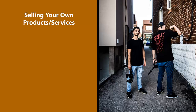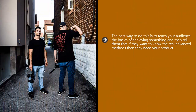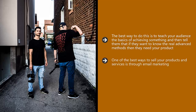Selling your own products or services: this is something you can do fairly quickly with your vlog. Examples include a book, a how-to guide, a video training course, or coaching services. The best approach is to teach your audience the basics of achieving something and then tell them that if they want the real advanced methods, they need your product. Provide value in your videos to get your audience hooked, but don't give everything away for free. One of the best ways to sell your products and services is through email marketing, using an autoresponder service such as AWeber or GetResponse and providing something of value for free as an incentive to join your email list.